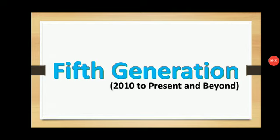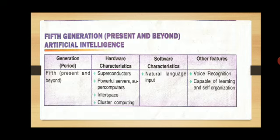Now let's discuss the fifth generation. The fifth generation starts from 2010 to the present and beyond. In the fifth generation, hardware characteristics include supercomputers, superconductors, powerful servers, and cluster computing. These are the hardware components used in the fifth generation.